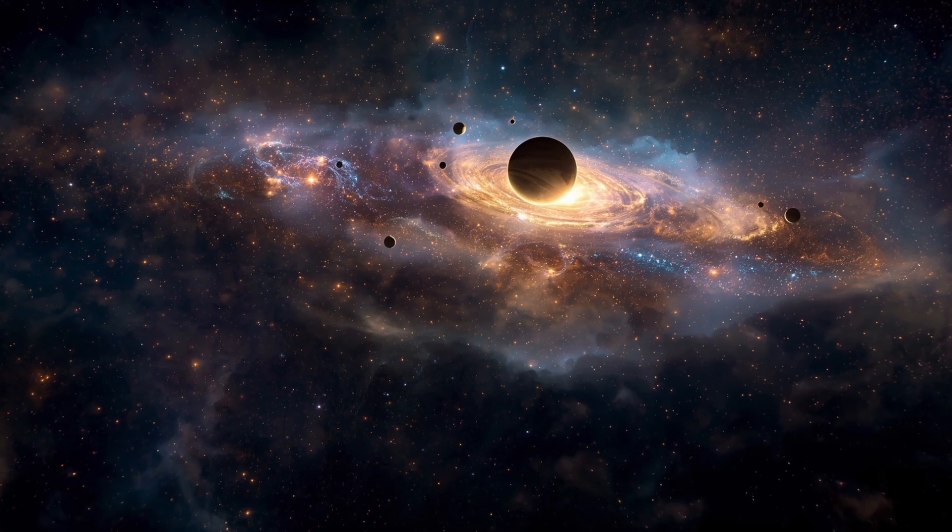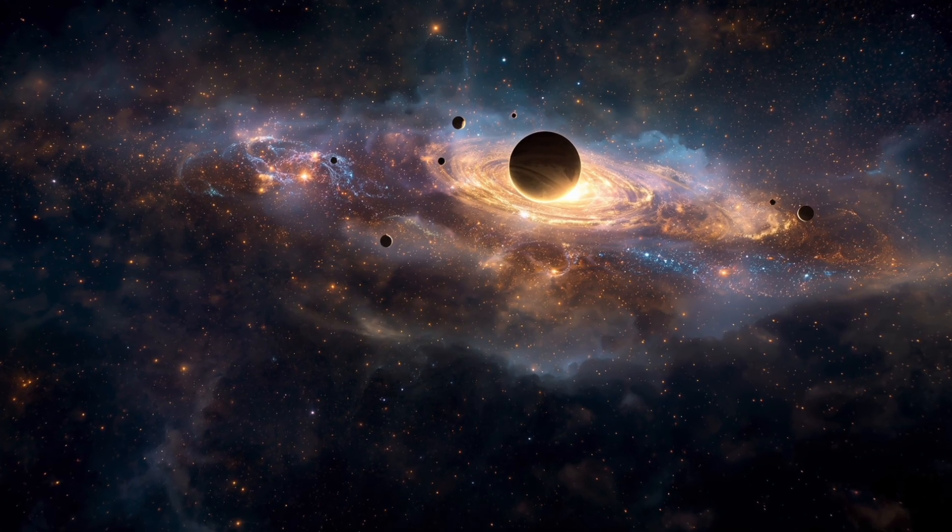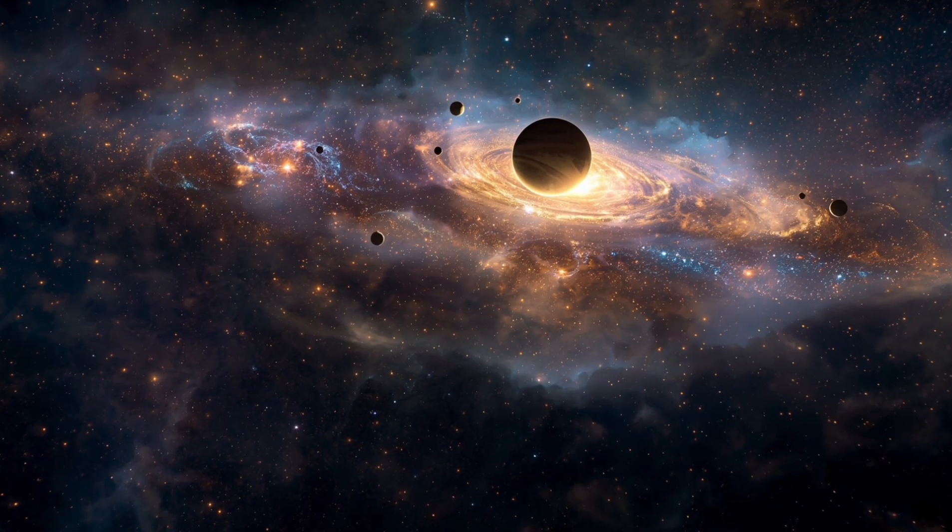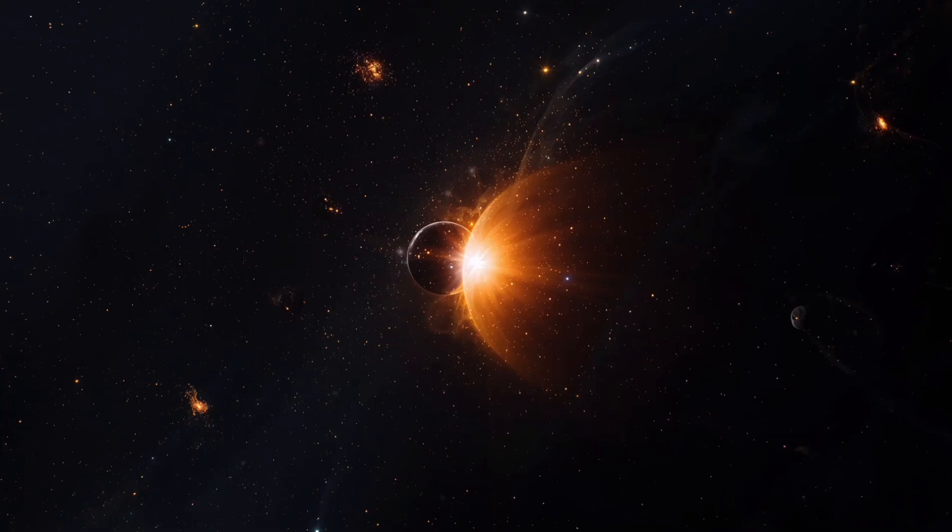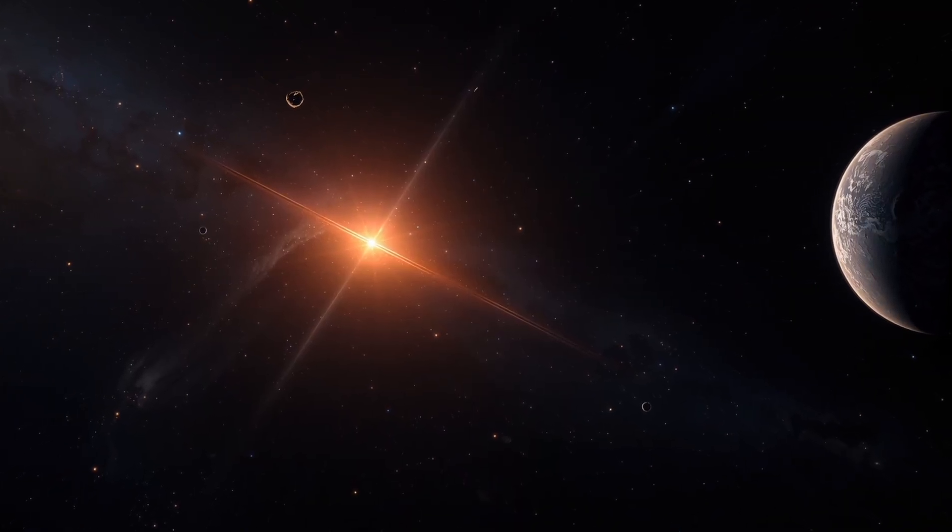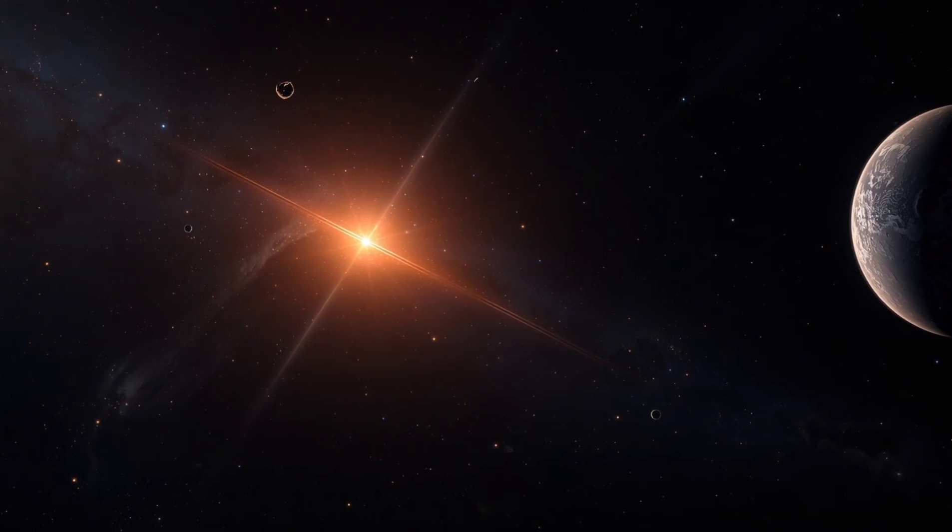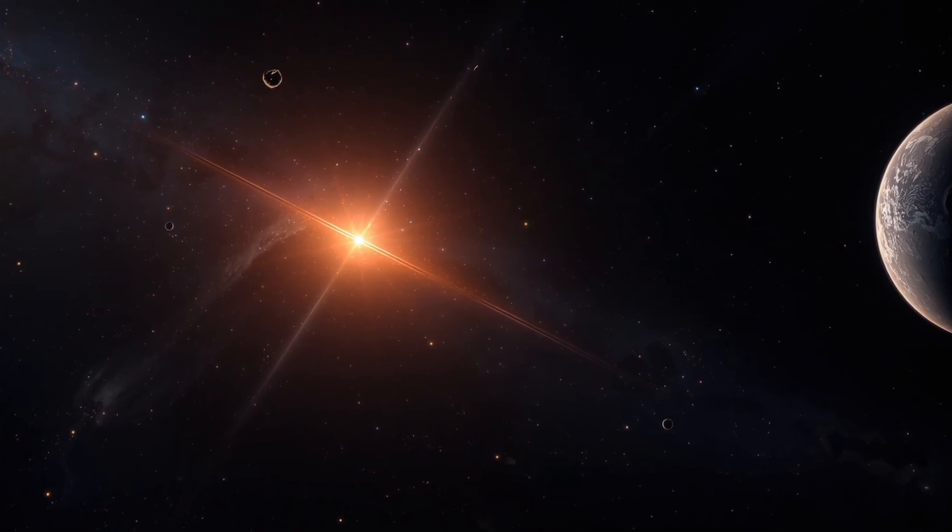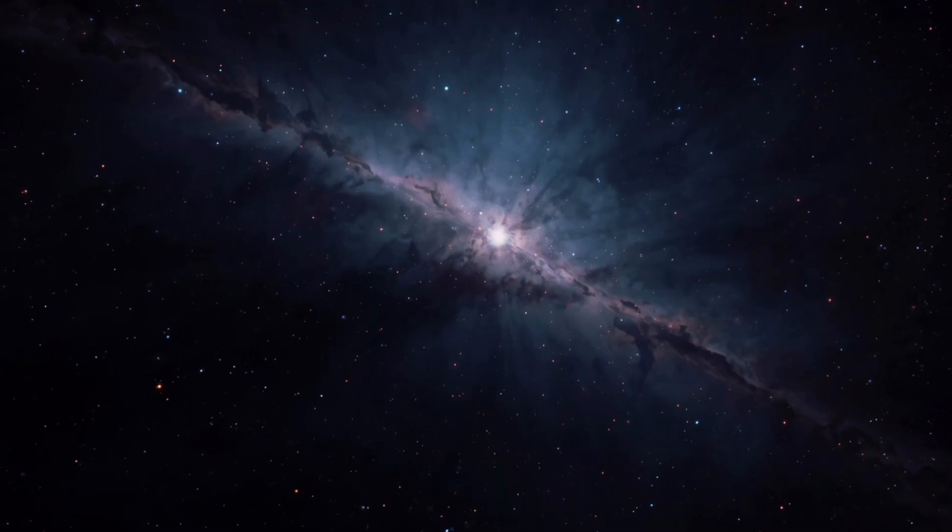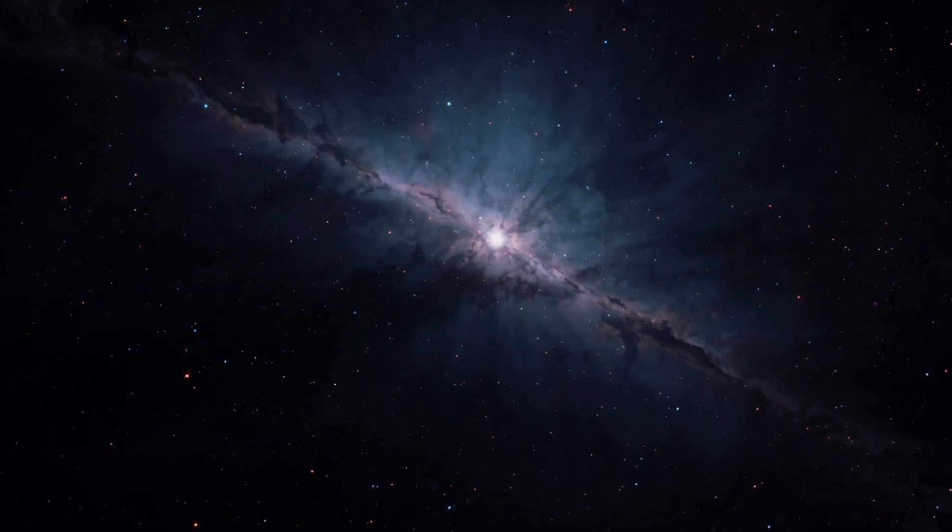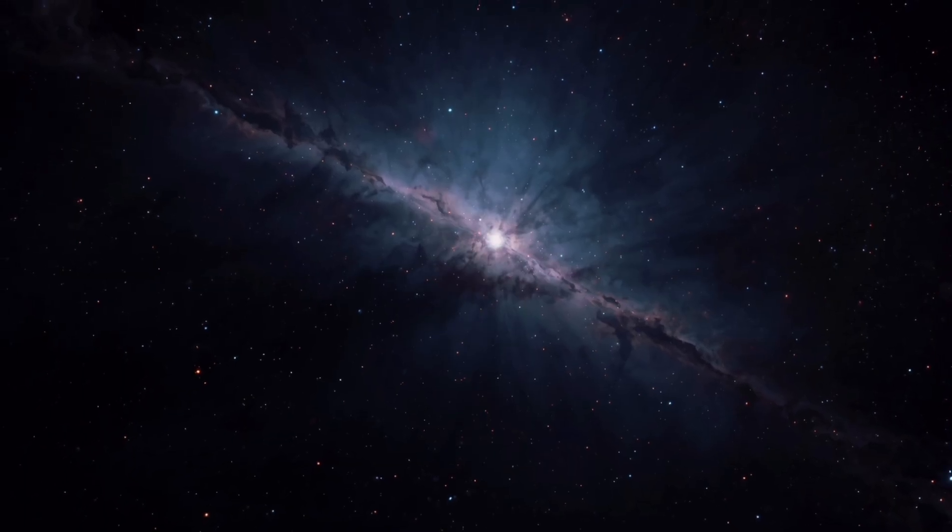Moreover, our solar system is not stationary. It orbits the centre of the Milky Way galaxy, passing through regions dense with gas clouds, star clusters, and dark matter. Occasionally, the sun drifts close to a massive cloud or a wandering star, which can gravitationally disturb the Oort Cloud, sending comets careening toward the inner solar system. The potential for a catastrophic impact event is real, a reminder that our peaceful planetary neighbourhood is precariously balanced in a cosmic battlefield.